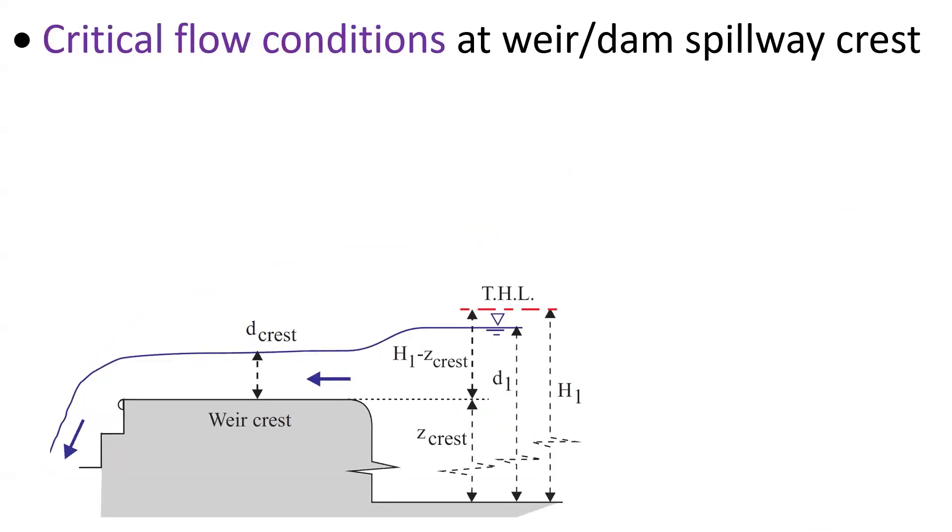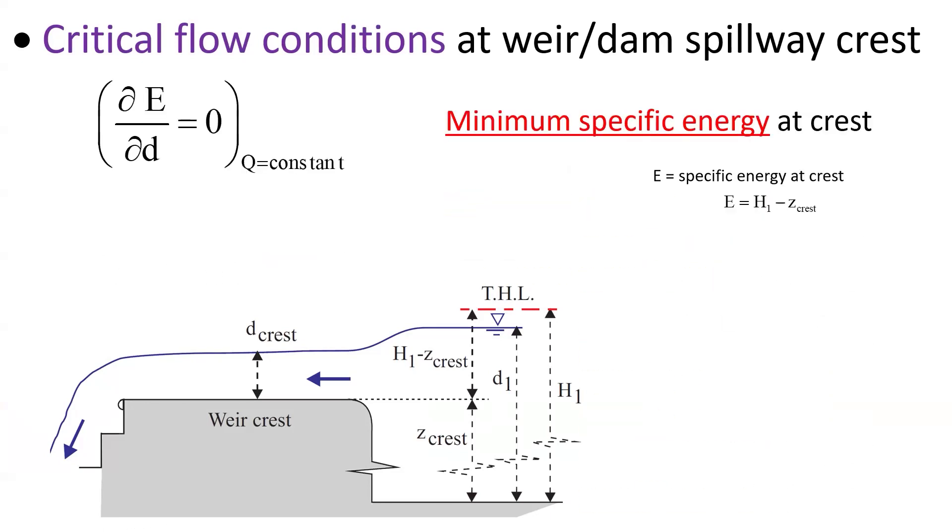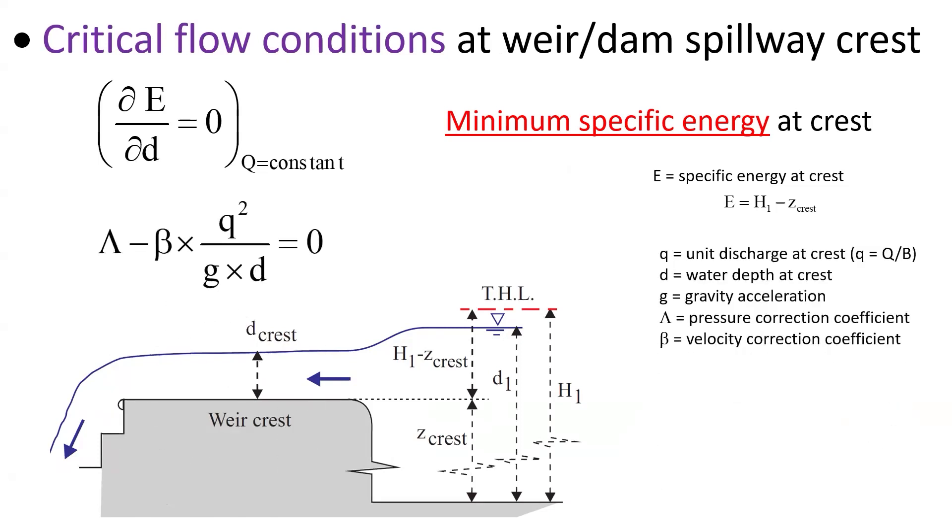Critical flow condition at the weir crest implies that the specific energy at the crest is minimum. Following Bakhmetev, the derivative of the specific energy with respect to the water depth must equal zero, which leads to a relationship between the unit discharge at the crest and the water depth at the crest, assuming in first approximation that lambda and beta are constant.